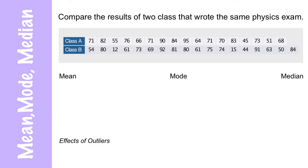So here we go: mean, mode, and median. We're going to compare the results of two classes that wrote the same physics exam. Let's start with class A. Because this is a sample of the whole, that's the symbol we're going to use. The sum of the data by the number of data that we have. So the sum becomes 1215. The number of test scores we have is 17. So the average of the class is 71.5.